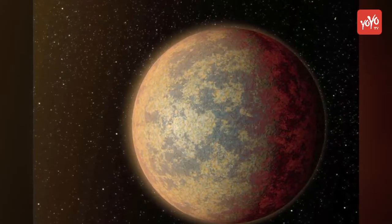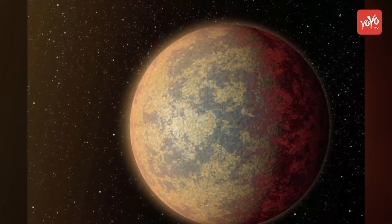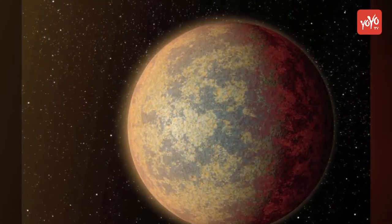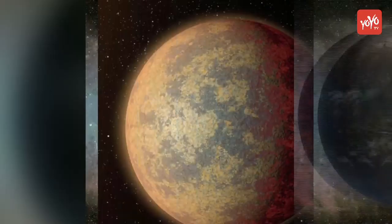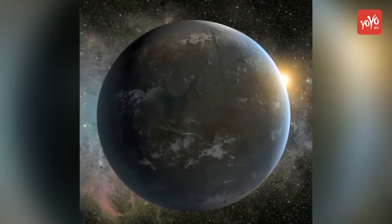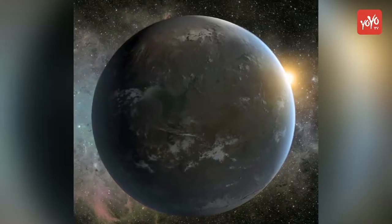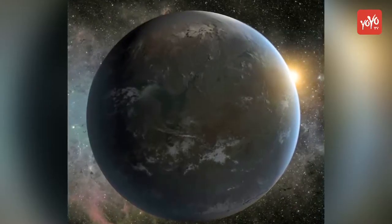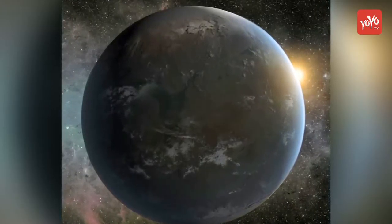However, it is not just Wolf 1061's proximity to Earth that made it an attractive subject for Cain and his team. One of the three known planets in the system, a rocky planet called Wolf 1061 c, is entirely within the habitable zone.